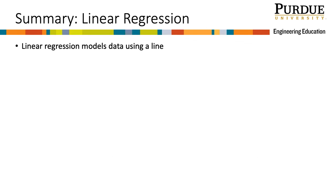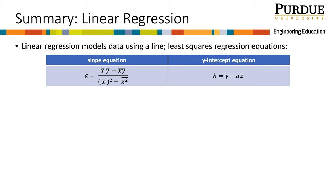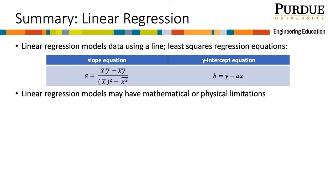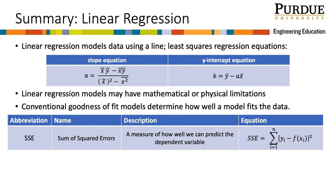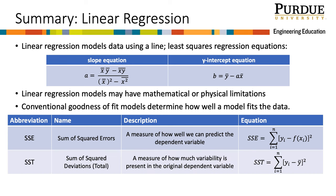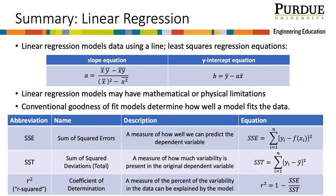Here's a summary of this online module. We learned that linear regression models data using a line, and least squares regression is one way to calculate a regression line. Linear regression models may have mathematical or physical limitations, so be careful of using a model outside of the range of values through which the model was created. There are several conventional goodness-of-fit models: the sum of squares due to errors measures how well the model predicts the dependent variable; the sum of squares of the deviations or total sum of squares measures how much variability is present in the original dependent variable; and the coefficient of determination is a ratio or percent measure of how much variability in the data can be explained by the model.